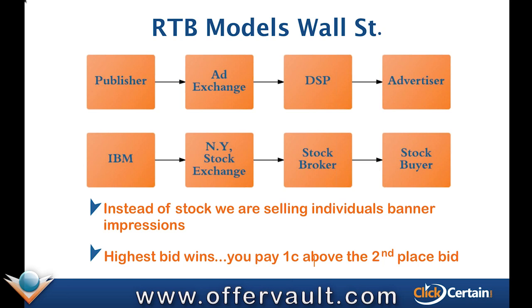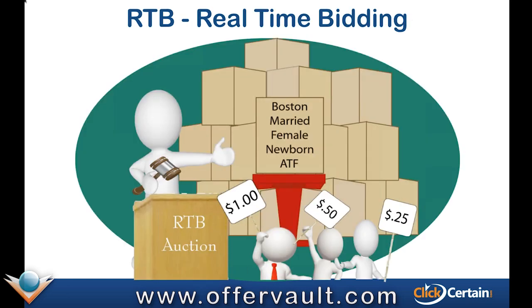The way in which each impression goes up on auction — it's auctioned at the ad exchanges. You have all the attributions. So in this example, a woman who's married, lives in Boston, and has a newborn. ATF is above the fold, and we'll double back on above the fold.